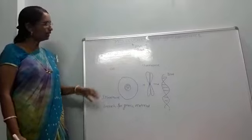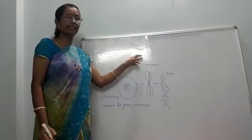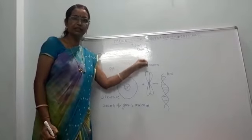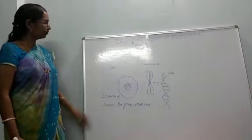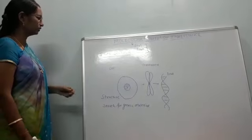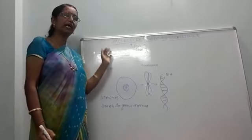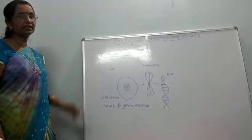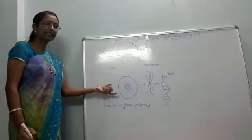To understand all these aspects, we have to define what nucleic acids are, where they are present, and what their chemical nature is. Apart from that, to understand the inheritance of characters from parents to offspring, we need to understand where exactly the nucleic acids are present. Let us take a cell as an example.